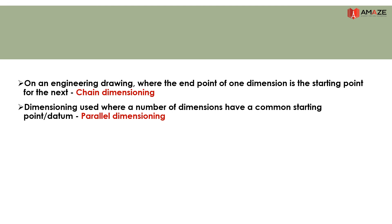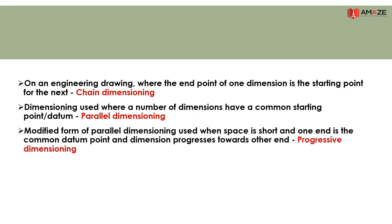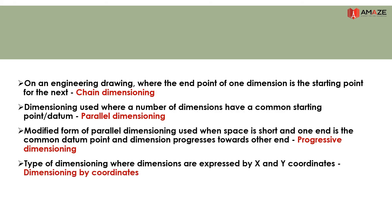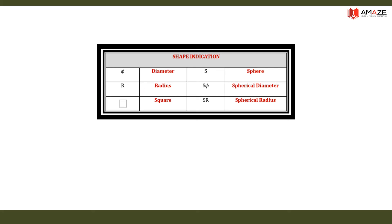A modified form of parallel dimensioning used where space is short, with one end as a common datum point and dimensions progressing towards the other end, is called progressive dimensioning. Dimensioning where the dimensions are expressed by x and y coordinates is called dimensioning by coordinates. Shape indication symbols include spherical radius and square.